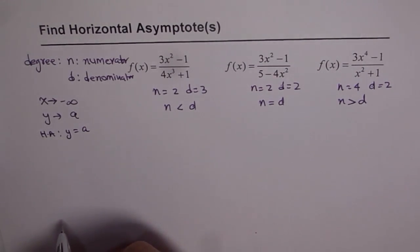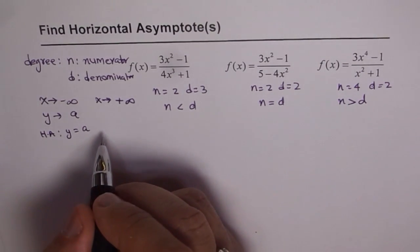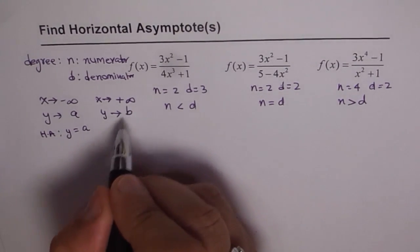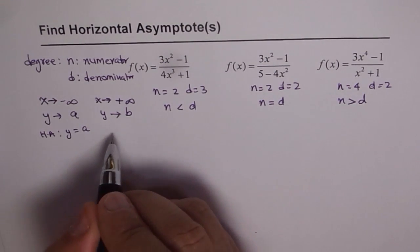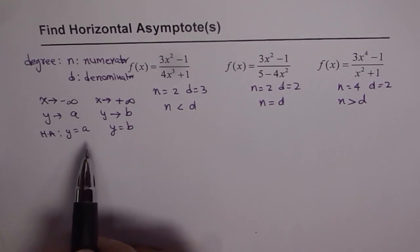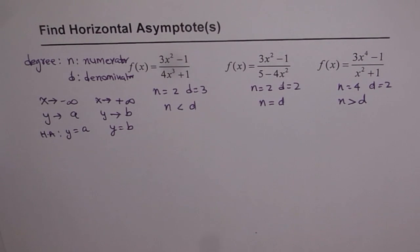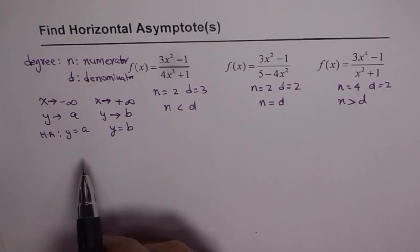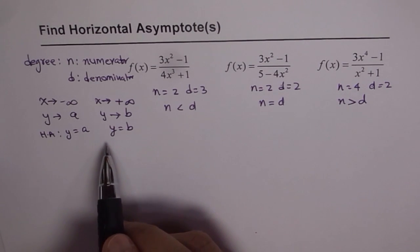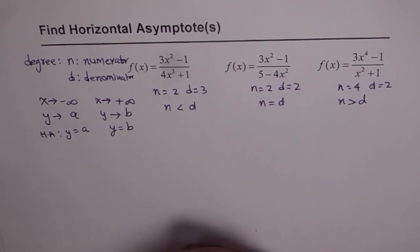Similarly, if x approaches positive infinity and y approaches a value b, then the equation of the horizontal asymptote will be y equals b. Most of the time a and b are the same, but it is not always true. There are cases when a horizontal asymptote may exist on one side but still it is a horizontal asymptote.